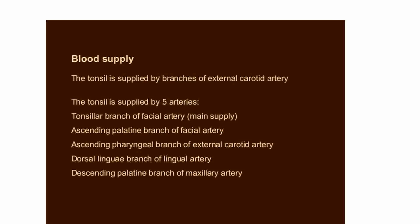Coming to the blood supply of the tonsil, which is very important. The tonsil is supplied by branches of the external carotid artery. There are five arteries supplying the tonsil: the tonsillar branch of the facial artery (the main supply), the ascending palatine branch of the facial artery, the ascending pharyngeal branch of the external carotid artery, the dorsal lingual branch of the lingual artery, and the descending palatine — otherwise known as the greater palatine branch of the maxillary artery.